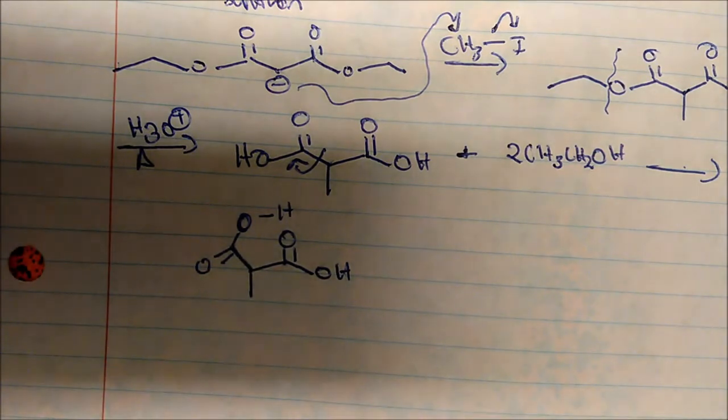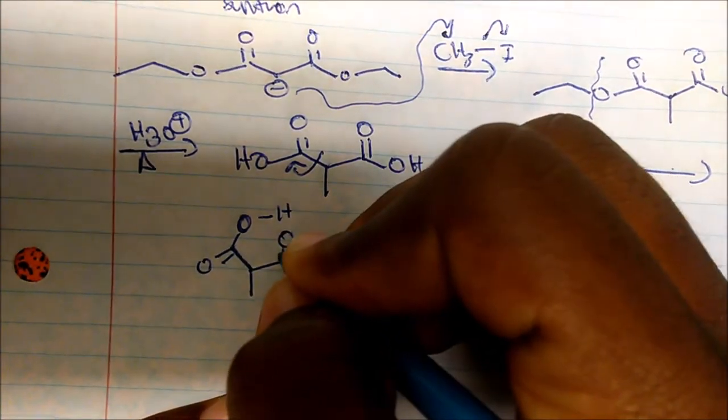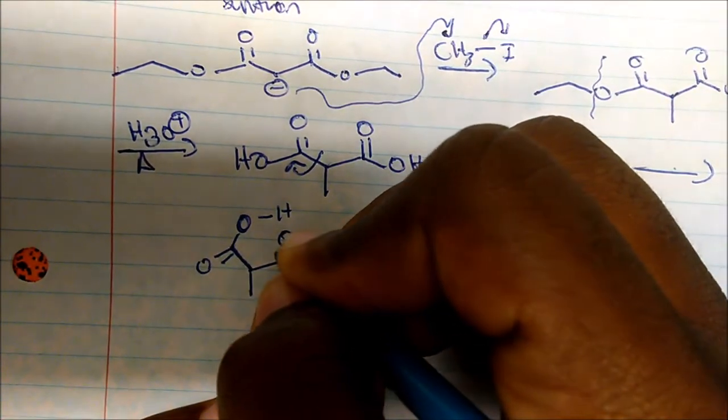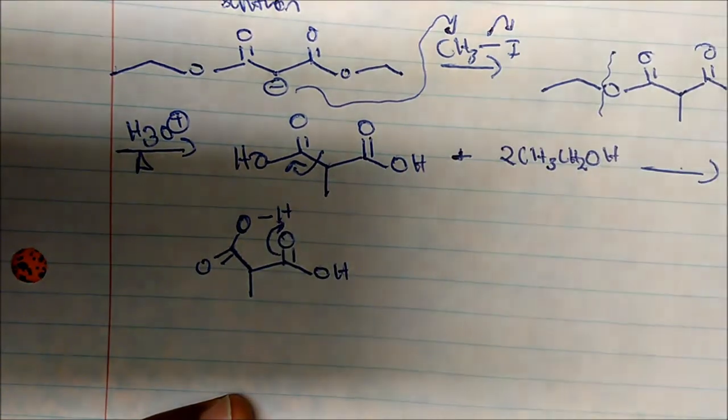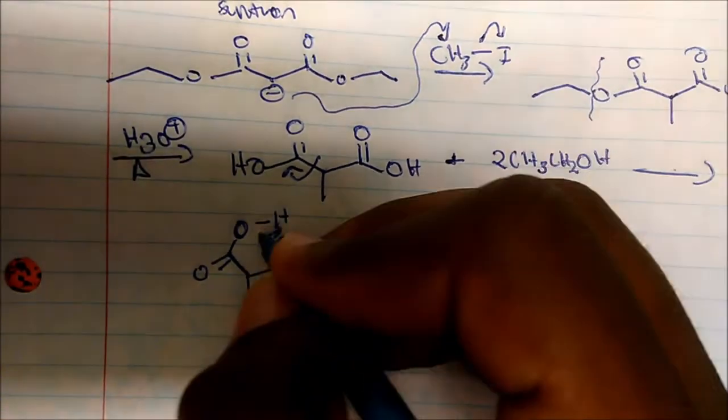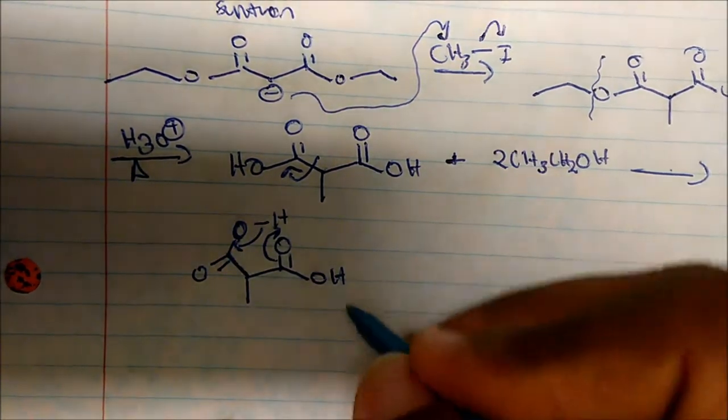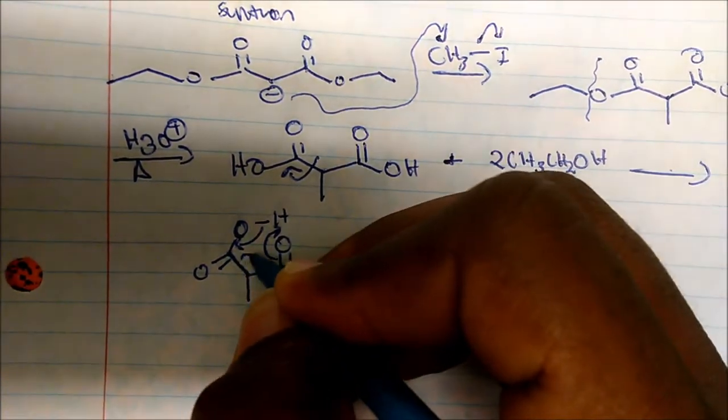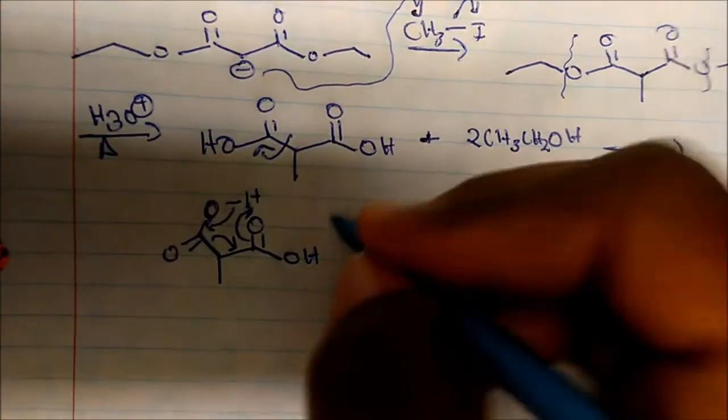Now, it just becomes a bond-making and bond-breaking situation. So the first thing that happens is that the bond on the oxygen will come and bond to the hydrogen. Once that happens, this bond will break and form a double bond here. And then the next thing that happens is that this bond will break and form a double bond here.